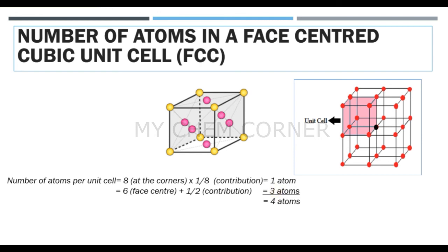That concludes this video, where we covered the basic definitions of crystal lattice and unit cell, looked into the seven types of primitive cells in a crystal, and calculated how many atoms actually belong to each type of unit cell. In the next video, we will do calculations on how to find the formula of a compound using this basic information. Stay tuned for that, and I'll see you in the next video — thank you so much!